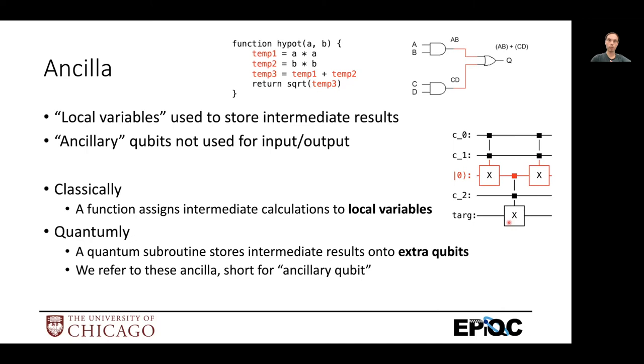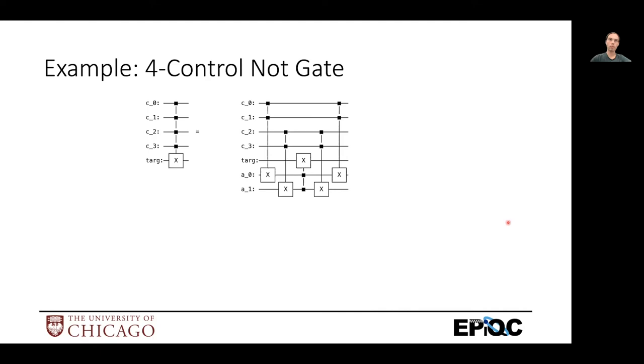So this is a four-controlled not gate or a generalized toggle gate. And one way to implement this out of smaller gates is to pair up each of the controls into twos and say, if this control is one and that control is one, then write this temporary result. And then do it again for this control and this control and write to a different temporary result. And then once you've done that, you now have half as many controls and you pair those up and write to your target. And that works pretty well.